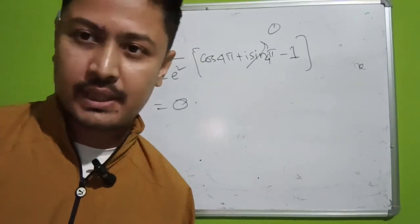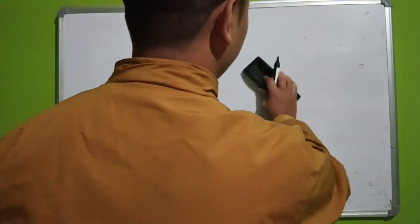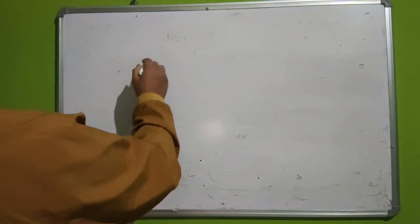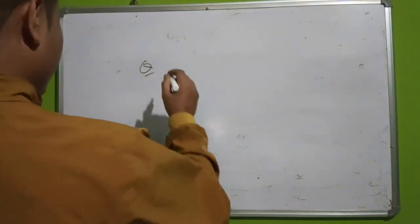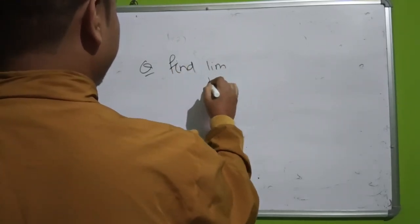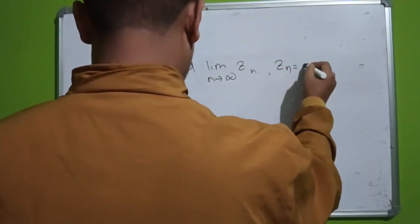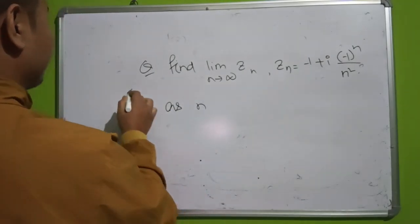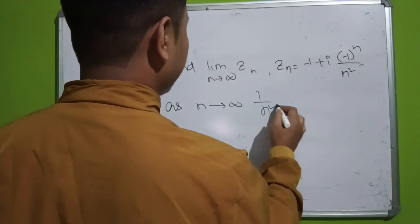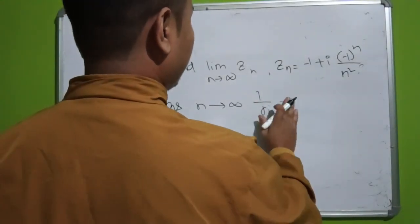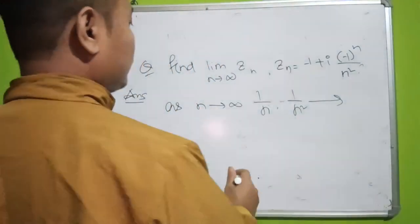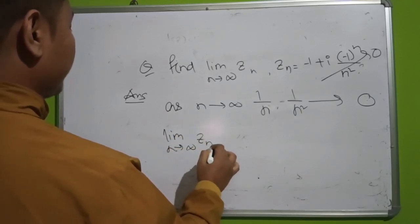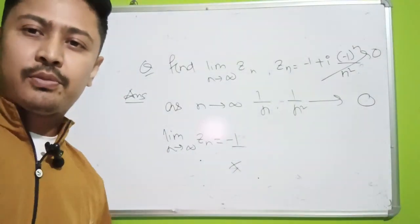So ultimately the value of the integral over the closed curve is zero. Moving on, the last question: find the limit as n → ∞ of z_n, where z_n = (−1 + i)^n / n². As n → ∞, since 1/n² → 0, the sequence z_n → 0. So the answer is zero.